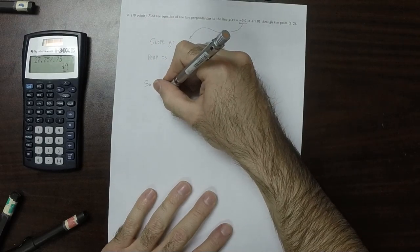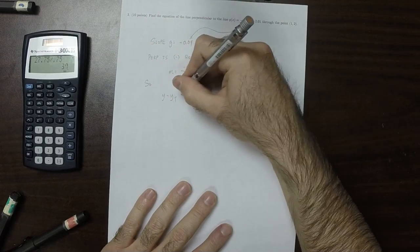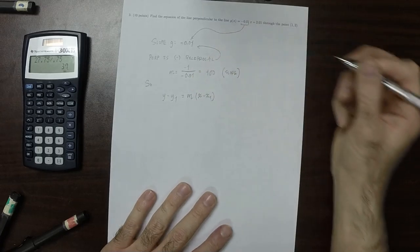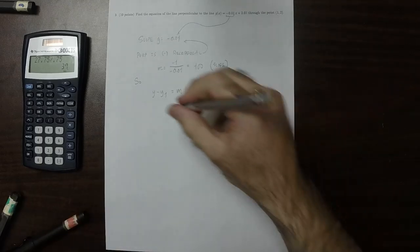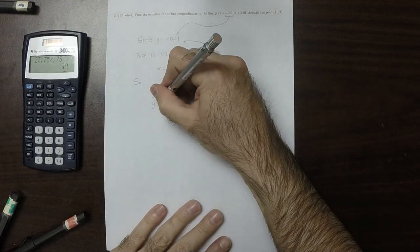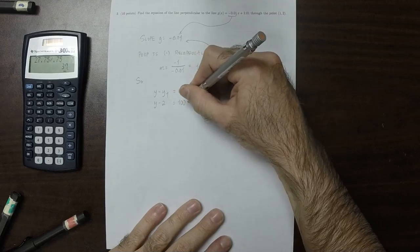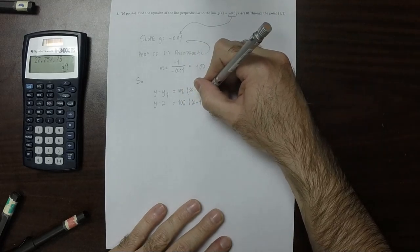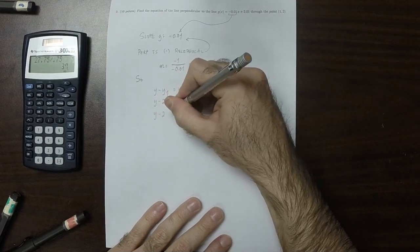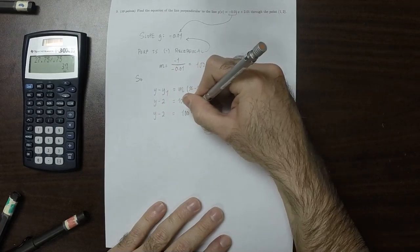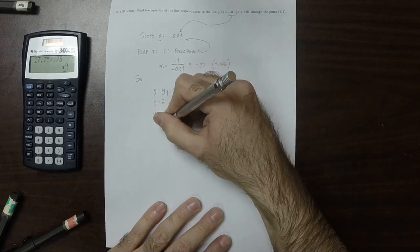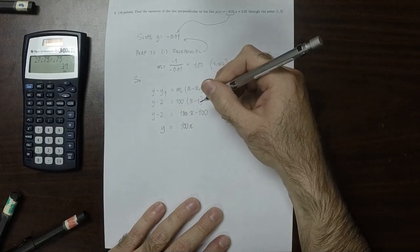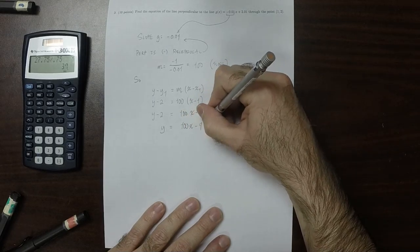So the point-slope formula is y minus y1 equals m times (x minus x1). Plugging in all the things that we know, that's y minus 2 equals 100 times (x minus 1). So y minus 2 equals 100x minus 100. So y equals 100x minus 98.